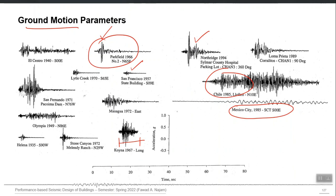One PGA is not enough. We must have a list of all ground motion parameters — numbers which tell us the information about ground shaking.